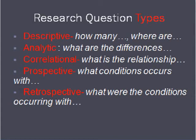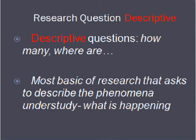You're definitely going to work on your research questions, and there are also types of research questions. Hauser puts them into four types — Tappan frames them differently, but basically: descriptive (how many, what are), analytical (what are the differences), correlational (what is the relationship), and prospective (what condition occurs with — measuring going forward) or retrospective (measuring what occurred in the past). I'll go over these briefly.